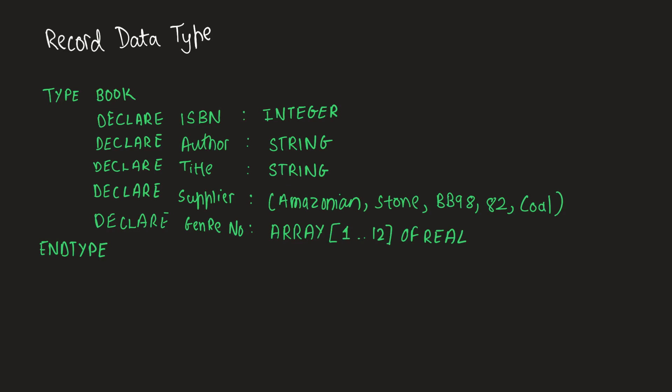Now, to access a particular value in a record data type, we have to use dot notation, and this is how it happens. Here we are giving the field author the value Gerald — that's the name of the author. To access the author field and add the value Gerald into author, we are using the dot notation: book dot author.